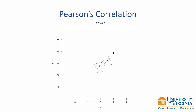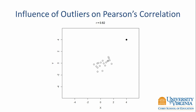Moving that point to the upper right corner, the correlation increases to 0.82. Moving it again, the correlation drops to 0.42. Moving the point to the bottom right corner, the correlation not only becomes smaller but reverses direction to negative 0.35. At another position, the correlation is positive but smaller than the original. Moving it to the bottom left corner, the correlation increases from its original value but remains positive. At another location, the correlation drops and turns negative. Finally, moving the outlier to another point reduces the correlation to 0.24. These figures illustrate how sensitive the Pearson correlation is to bivariate outliers.